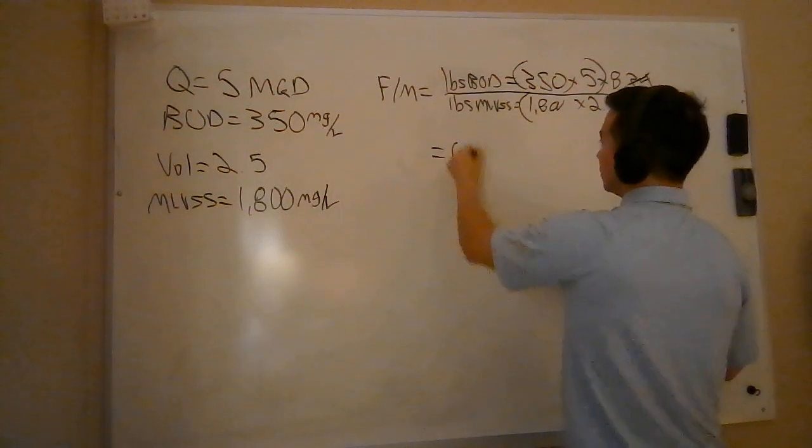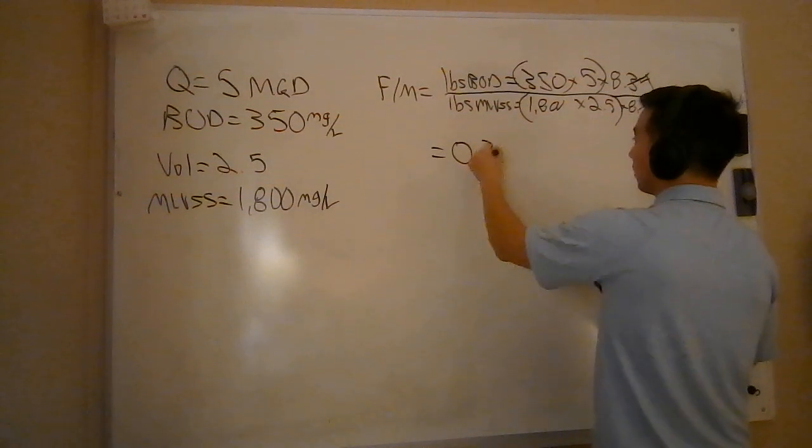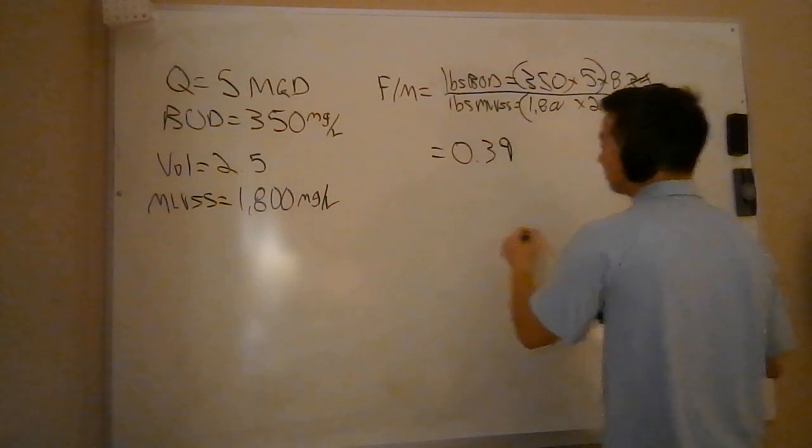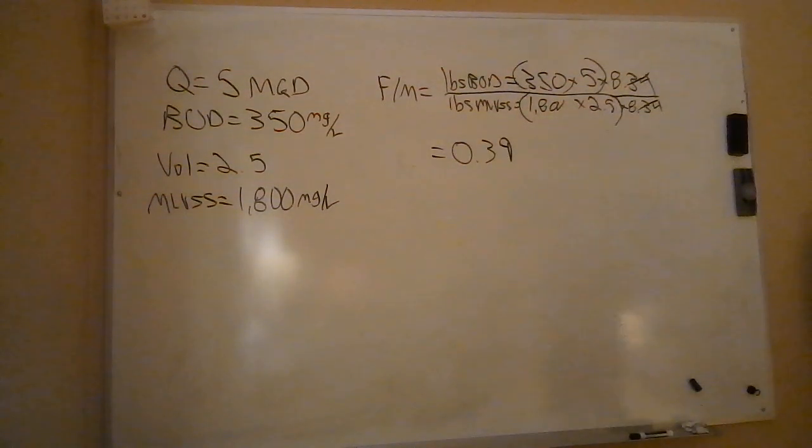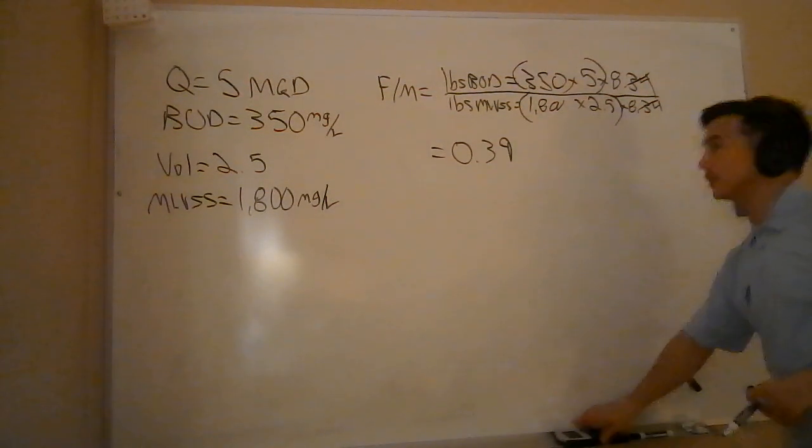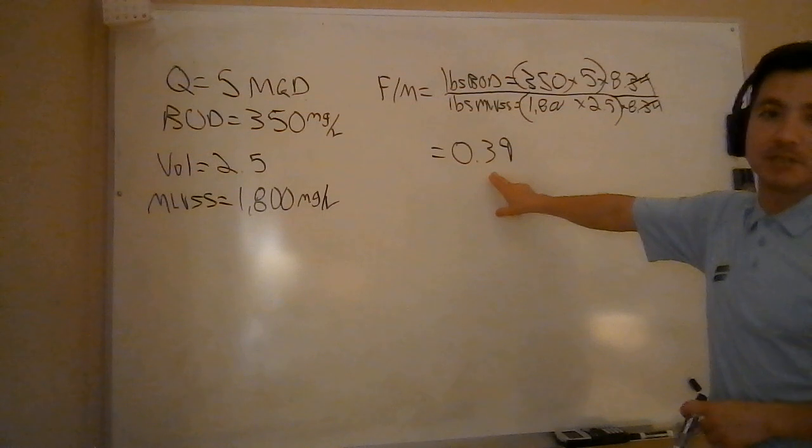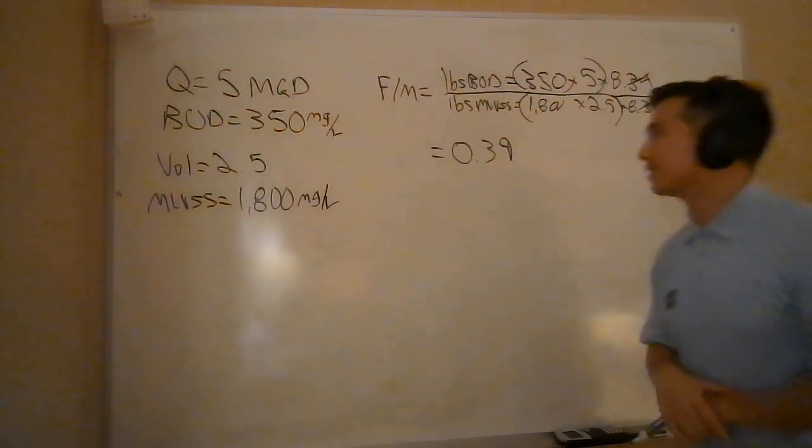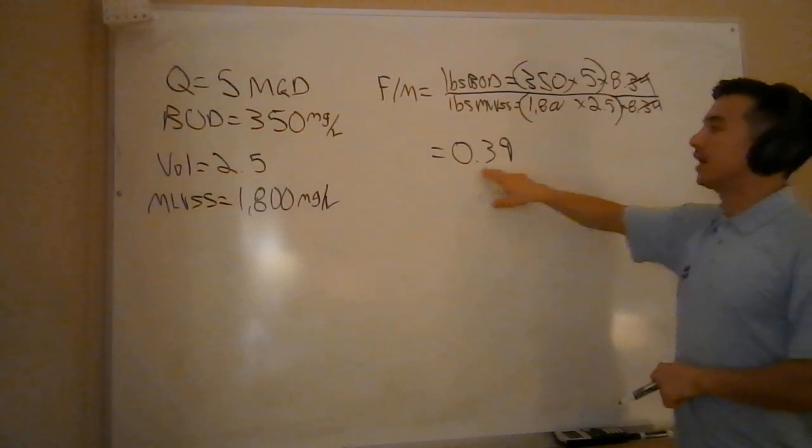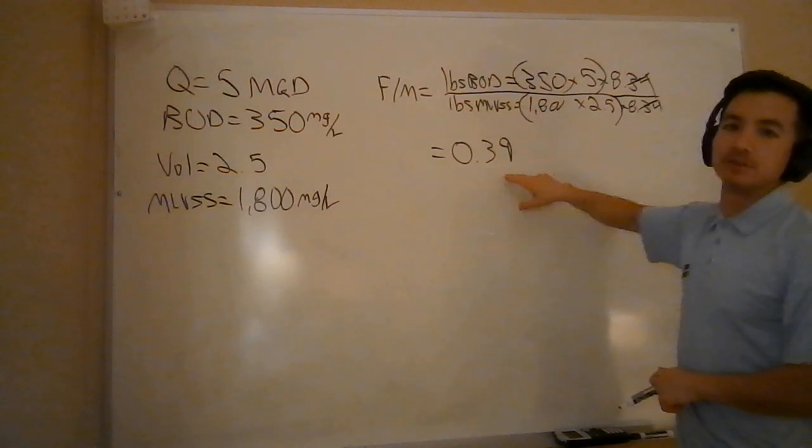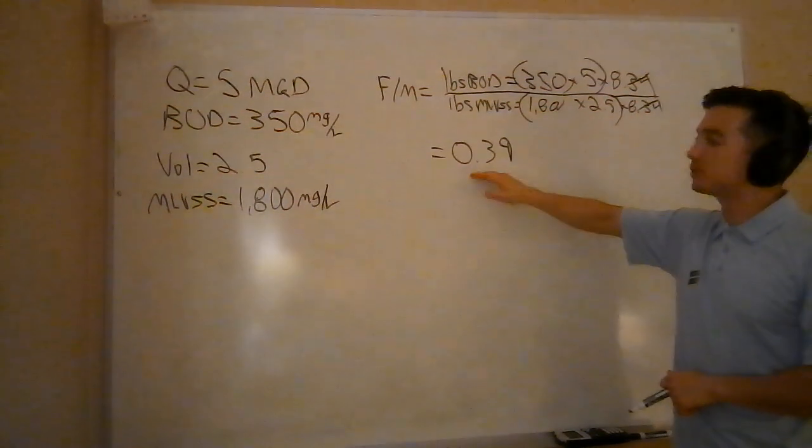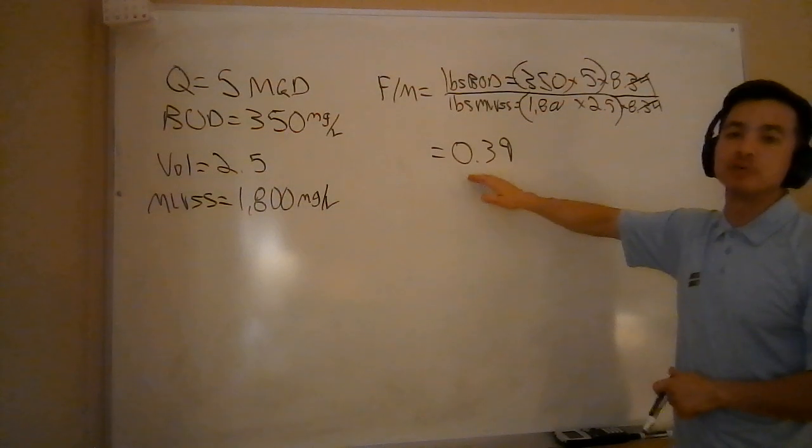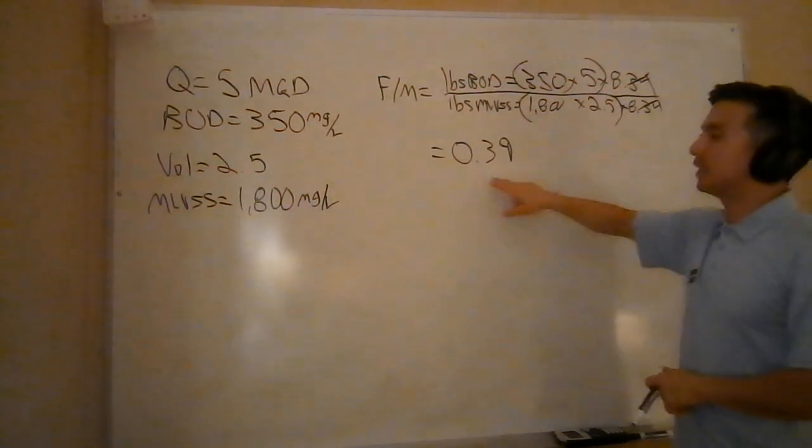I get a FM ratio of 0.39, or we'll call it 0.39, which is basically 0.4, which is in our ideal range. Yes, that's right where we want to be. So as a plant operator, you're going to have kind of your ideal range here for your FM ratio, where you know this is where our plant operates most efficiently, most effectively. And you're going to plan for that accordingly, keeping in mind, of course, this is going to fluctuate throughout the year, throughout even different times of the day.